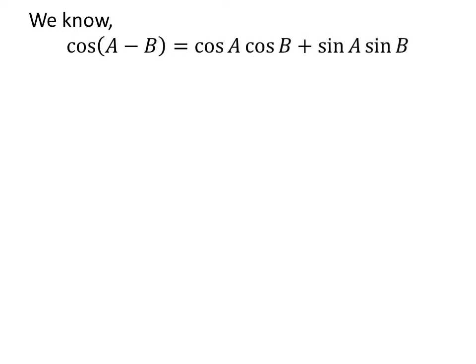As we know, the trigonometry identity cosine of A minus B is equal to cosine of A times cosine of B plus sine of A times sine of B.